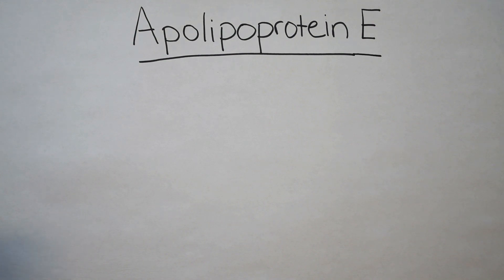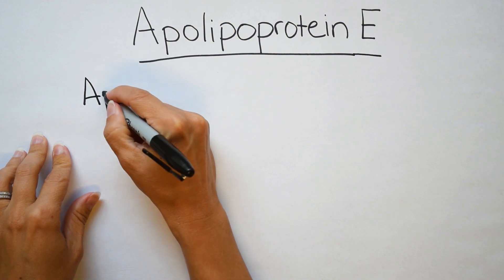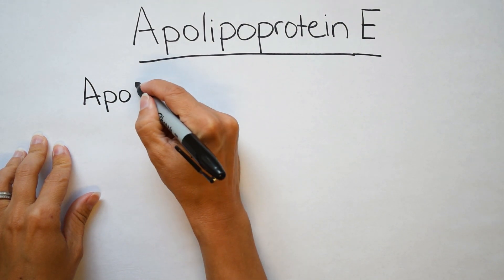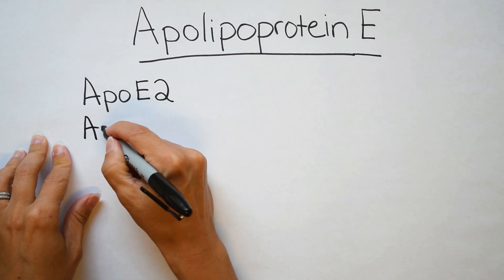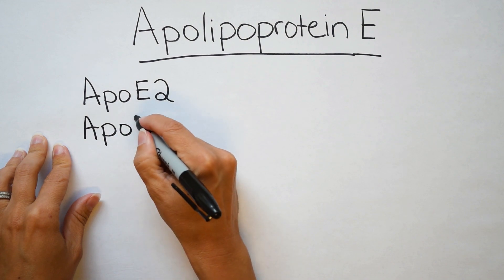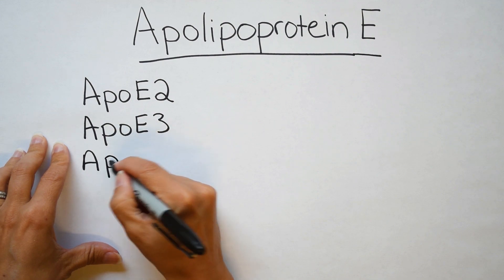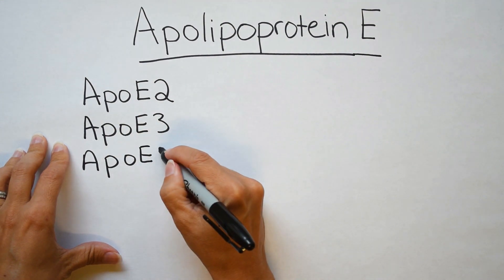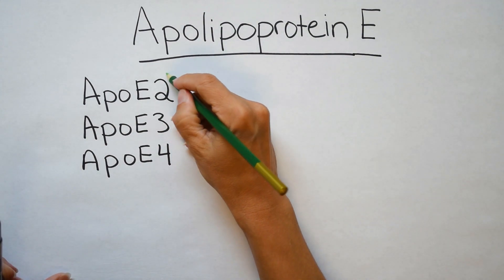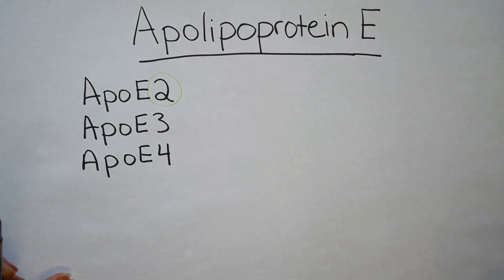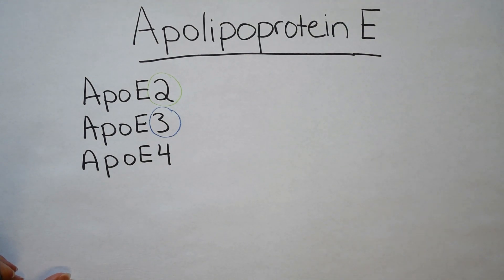Let's deep dive into APOE2 specifically, but I'll go over all three variants briefly first. APOE2 is potentially exciting because it is found to be protective during Alzheimer's disease. APOE2 is found in only about 5% of the population. APOE3 is carried by the vast majority of us — one if not two copies. APOE4 is found in about 20% of the population. I've color-coded them: APOE2 in green, APOE3 in blue, and APOE4 in red.